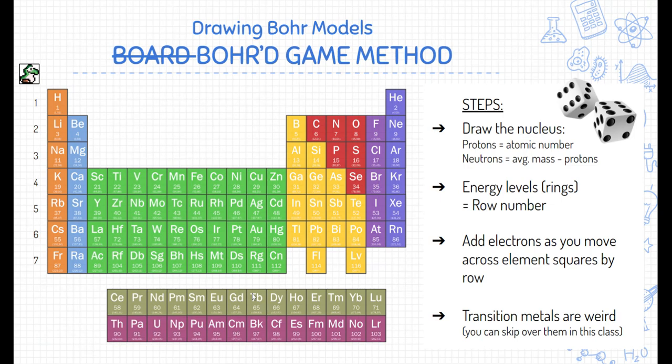Next, we'll add electrons. We'll do that by playing what I call the board game method. I'll show you what that means next. But we move across element squares to help us figure that out. Lastly, we're going to skip elements down in the transition metals. They're just kind of weird and they do weird things. They're not too hard to deal with.